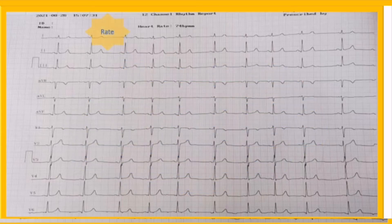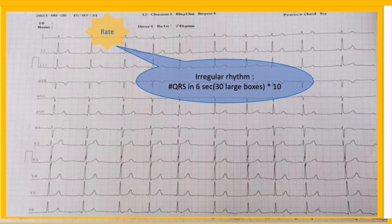The third step is calculating heart rate. There are several methods to calculate heart rate, which mainly depends on the underlying rhythm. If the rhythm is irregular, like our today's EKG strip, count the number of complexes within six seconds — that is 30 large boxes — and then multiply by 10.